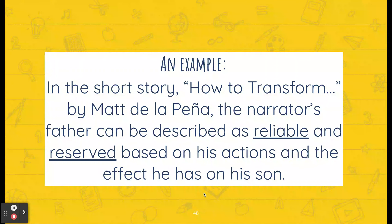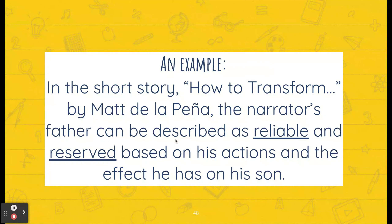Here is an example using the story 'How to Transform' — a really long title, though none of you are writing paragraphs on it, but we're relatively familiar with it. In the short story 'How to Transform' by Matt de la Peña, the narrator's father can be described as reliable and reserved based on his actions and the effect he has on his son.